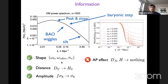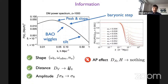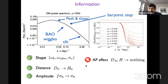In ΛCDM, the distance is controlled exclusively by H_0 once all other parameters are fixed by the shape. You can also measure σ_8 thanks to redshift-space distortions — in ΛCDM, f is fixed by shape and distance, so you measure σ_8 without degeneracy with f. It's worth noting that in ΛCDM the Alcock–Paczyński effect typically studied in BAO analysis gives no new information on cosmological parameters, since D and H are already fixed by shape and distance.